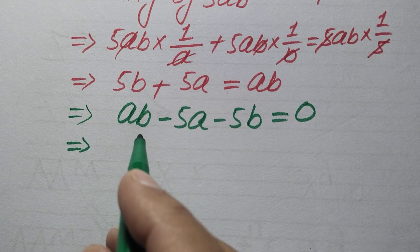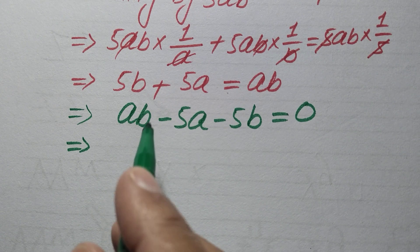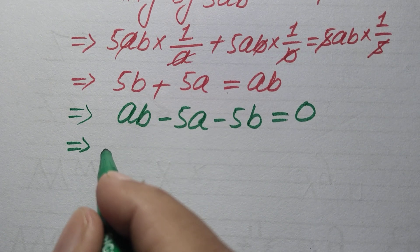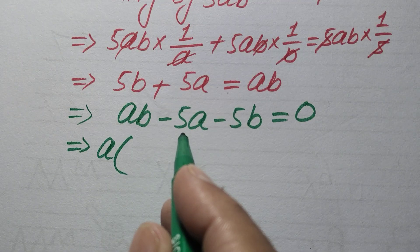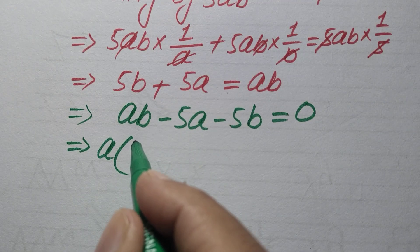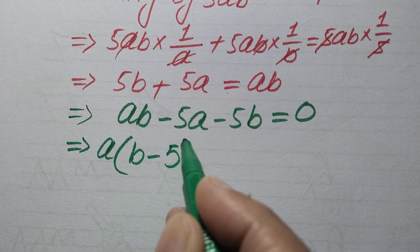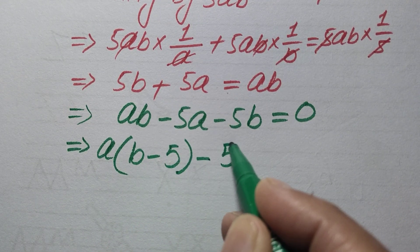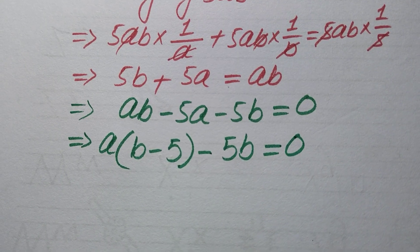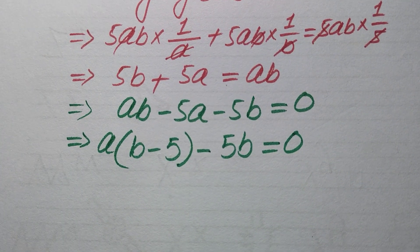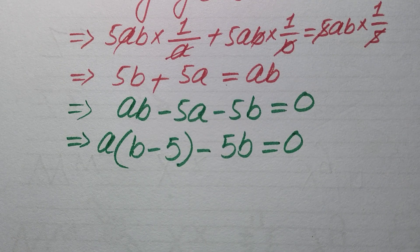In the first two terms we have a as the common factor. Taking a common from the first two terms gives a(b − 5), and then we have the remaining term −5b, so we get a(b−5) − 5b = 0.